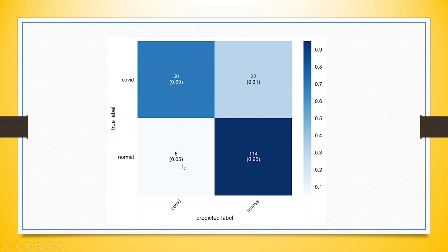Now let's talk about misclassified cases. A person is normal but the kit detects they have COVID — 6 such cases are misclassified. Similarly, 22 cases exist where a person has COVID but the kit detects they are normal. So 22 plus 6 are misclassified cases. The accuracy score and the ROC curve will both be generated on this basis.